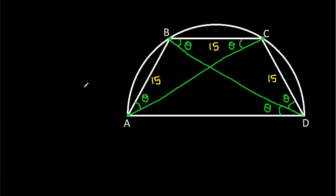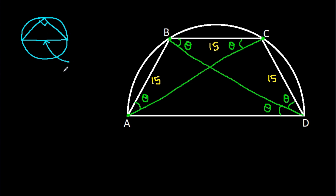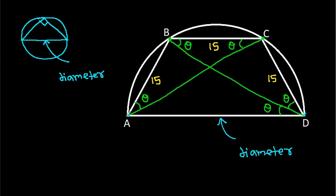Now, in any circle, the diameter makes an angle of 90 degrees on the circle. And here we have AD as the diameter, so angle ACD will be 90 degrees.